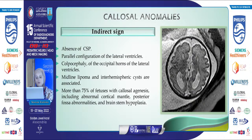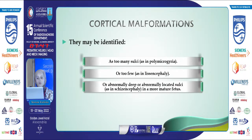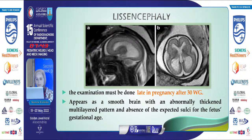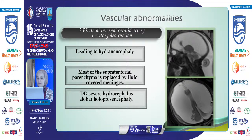More than 75% of fetuses with callosal agenesis have other associated brain anomalies, including posterior fossa anomalies and brainstem hypoplasia. Cortical malformations, associated with ventriculomegaly, can be identified on MRI by noting alteration of the normal sulcation pattern for a fetus at a particular gestational age, and may include polymicrogyria, lissencephaly, or schizencephaly. To diagnose lissencephaly, the examination must be done after 30 gestational weeks, appearing as a smooth brain with an abnormally thick multilayer pattern and absence of expected sulcation. Causes of hydrocephalus include vein of Galen malformation, dural venous sinus thrombosis, and bilateral internal carotid artery occlusion, which can lead to hydranencephaly, in which most of the supratentorial parenchyma is replaced by fluid. MRI can differentiate hydranencephaly from severe hydrocephalus and holoprosencephaly.